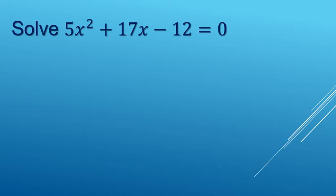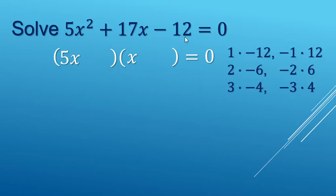So for factoring, there are several different ways. I'm going to use the guess and check method. So we start out with our two parentheses, and then 5x and x go to the firsts. And then for our last, they multiply to a negative 12.